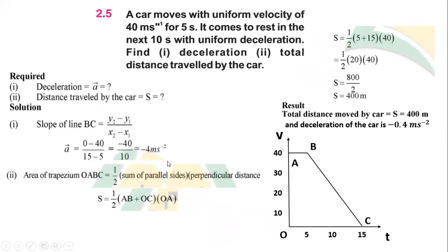To calculate total distance, we find the area under the speed-time graph. The shape is a trapezium with parallel sides AB and OC and perpendicular distance OA. Area = ½ × (AB + OC) × OA. AB is 5, OC is 15, and the perpendicular distance (height) is 40. Calculating: ½ × (5 + 15) × 40 = ½ × 20 × 40 = 400 meters. The total distance moved by the car is 400 meters.